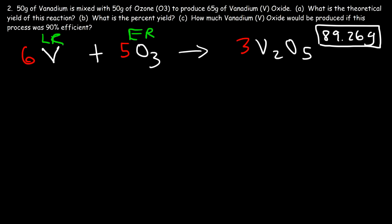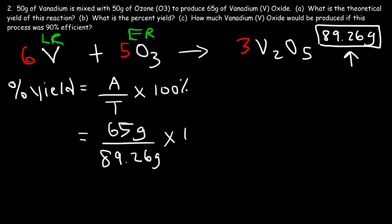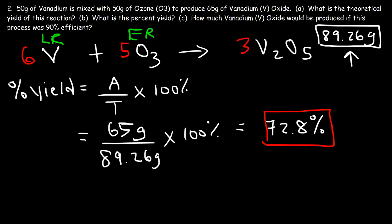Now let's find the percent yield. The percent yield equals actual yield divided by theoretical yield times 100%. The actual yield is 65 grams of vanadium oxide — that's how much was formed in this reaction. The theoretical yield is 89.26 grams, the maximum we can produce at 100% efficiency. So 65 divided by 89.26 times 100% means this process was 72.8% efficient — we only got 72.8% of how much vanadium oxide we could have collected.